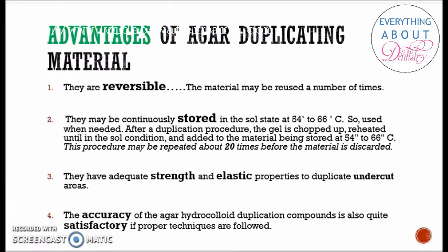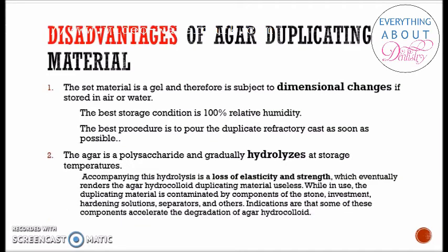Third, agar duplicating material has adequate strength and elasticity to duplicate undercut areas. Fourth, its accuracy is satisfactory if proper technique is followed. The disadvantages are: First, the set material is a gel and is subject to dimensional changes if stored in air or water. Best storage conditions are 100% relative humidity, and the best practice is to pour the refractory cast as soon as possible. Hydrocolloids — agar and alginate — undergo syneresis and imbibition, releasing or absorbing water, which may cause shrinkage or expansion of the duplicating material.